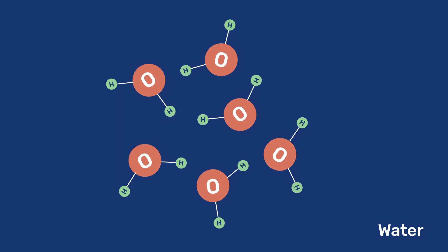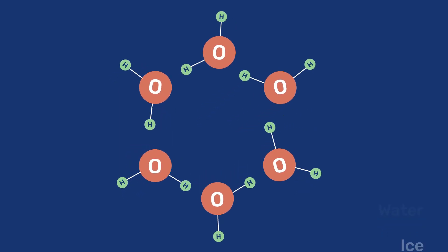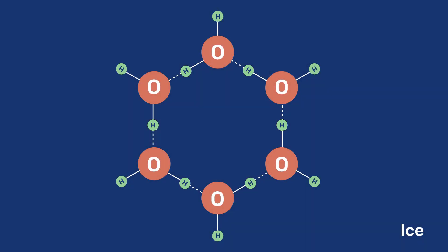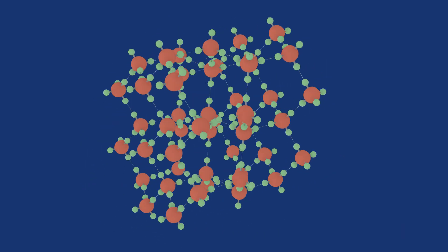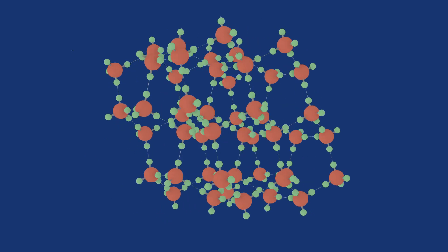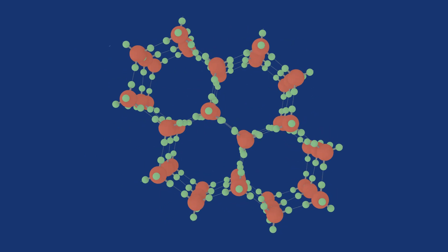This results from each water molecule forming two hydrogen bonds in the crystal structure of ice. Water molecules thereby organize into hexagonal rings, a step that is crucial in explaining the volume change. These rings further form layers that are then stacked one on top of the other to give the 3D structure of ice.